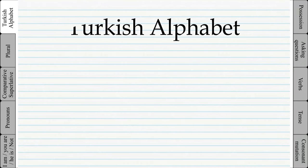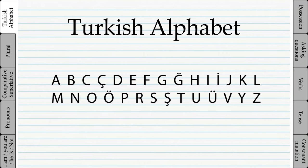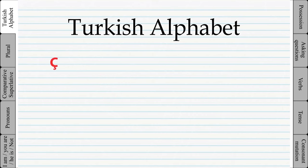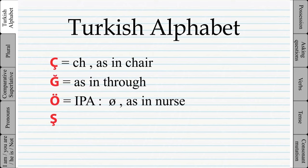The Turkish alphabet is very similar to the English alphabet. Most of the letters are almost the same except a few letters. What makes Turkish easy to learn is that the language is very systematic and very consistent, and the writing system is also very phonetic.